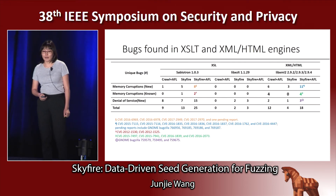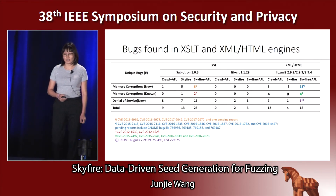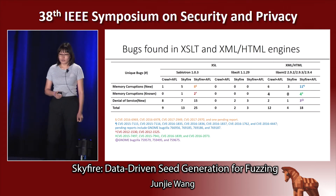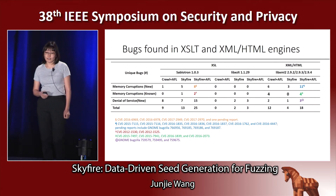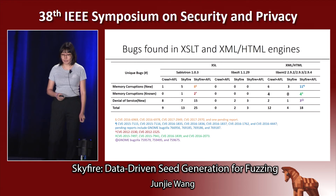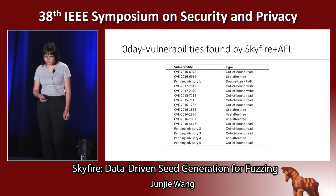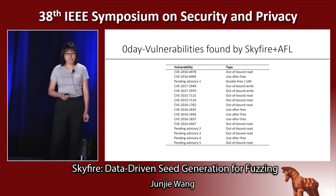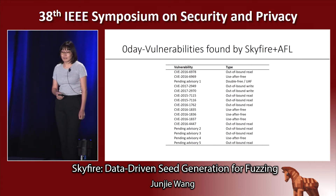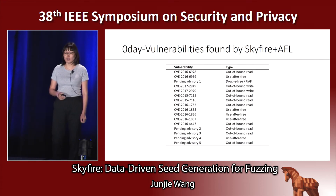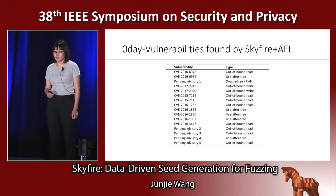This is the number of bugs we found in the two XSL engines and one HTML engine. SkyFire plus AFL in total found 19 new memory corruption vulnerabilities, six non-memory-corruption vulnerabilities, and another 21 new denial-of-service vulnerabilities. Among the 16 exploitable vulnerabilities found by SkyFire plus AFL, ten of them are out-of-bound read or write kind of vulnerabilities, and six of them are use-after-free or double-free kind of vulnerabilities.